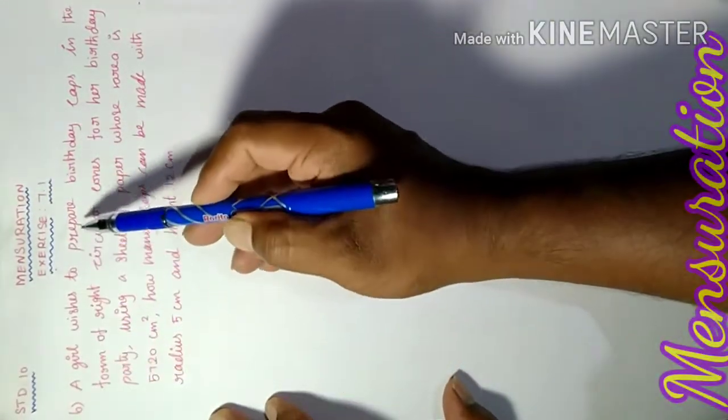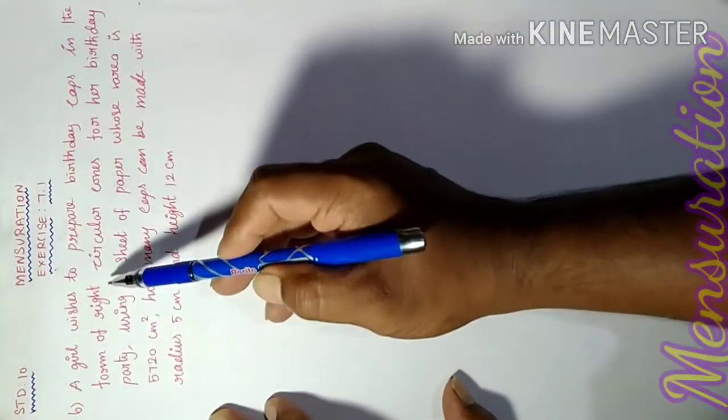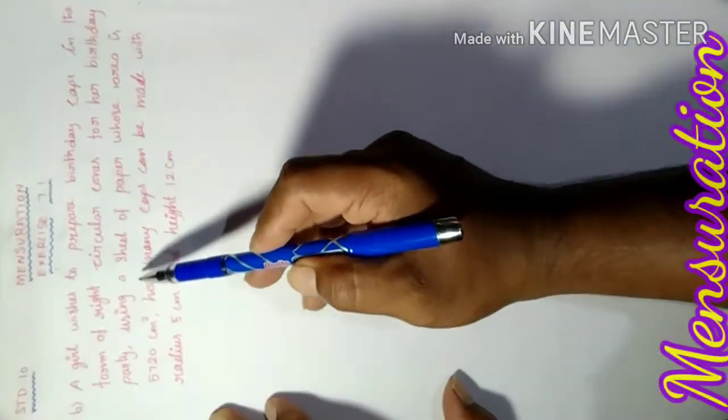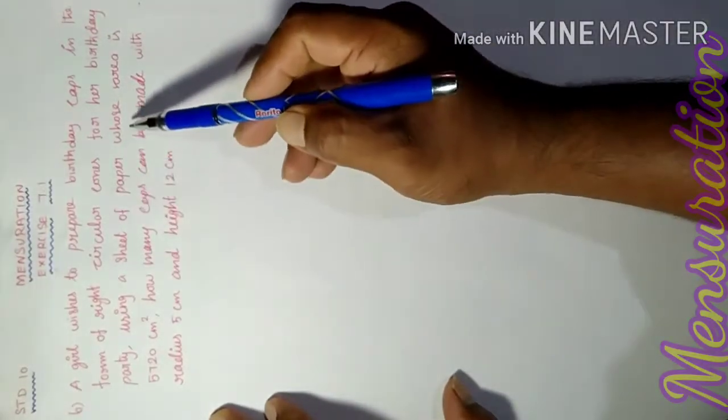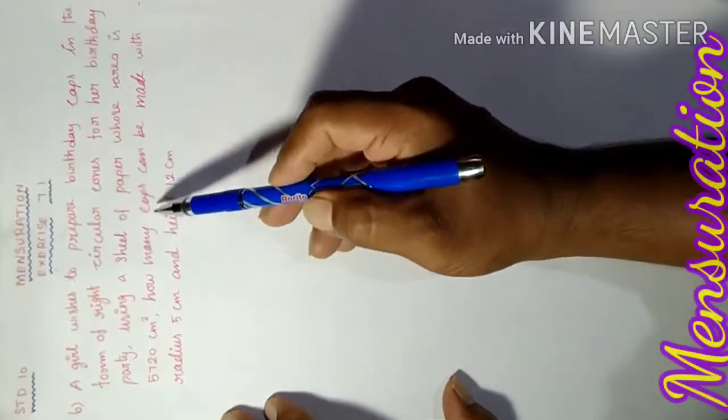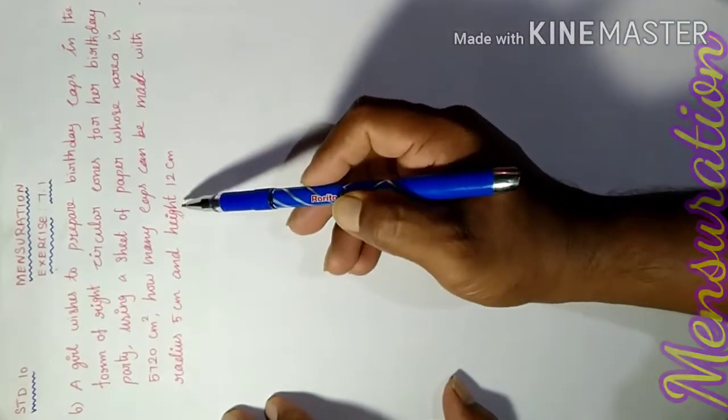A girl wishes to prepare birthday caps in the form of right circular cones for her birthday party using a sheet of paper whose area is 5720 cm². How many caps can be made with radius 5 cm and height 12 cm?